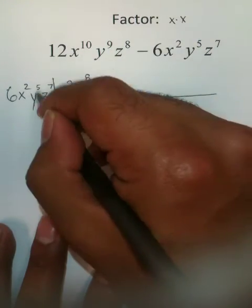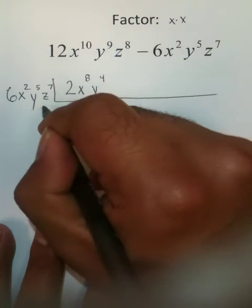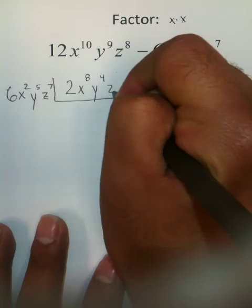y to the 9th divided by y to the 5th gives you a y to the 4th. And z to the 8th divided by z to the 7th gives you plain z.